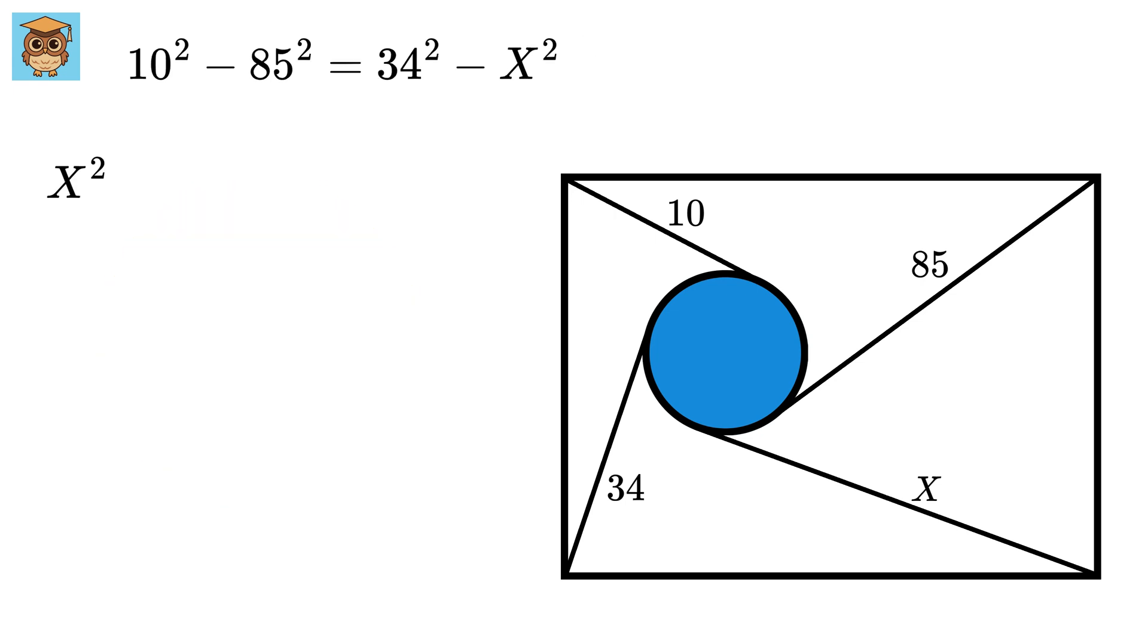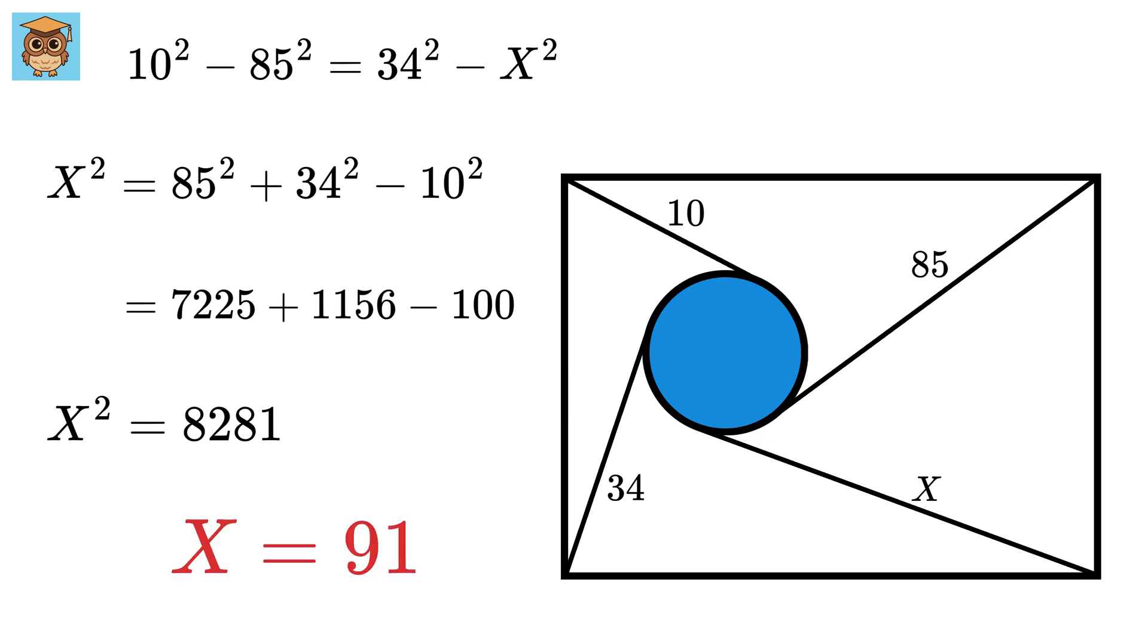So, we get x square equals 85 square plus 34 square minus 10 square. This is 7225, this is 1156, and this is 100. So, we get x square as 8281 or x equals 91. Isn't this cool?